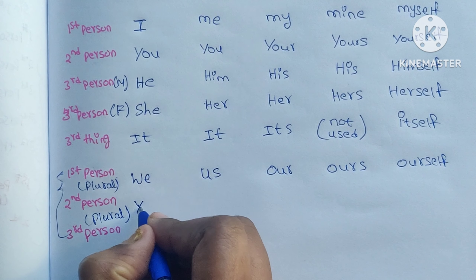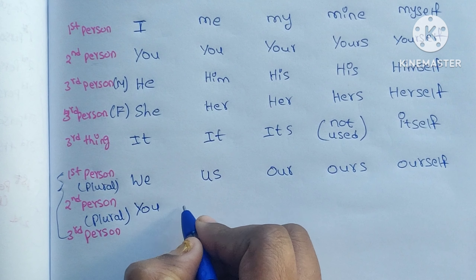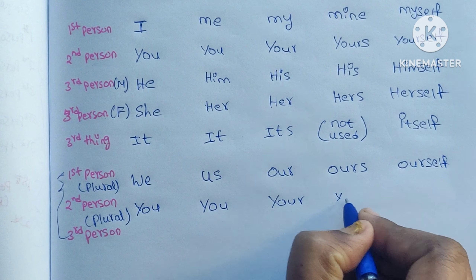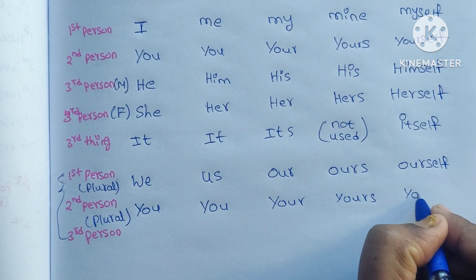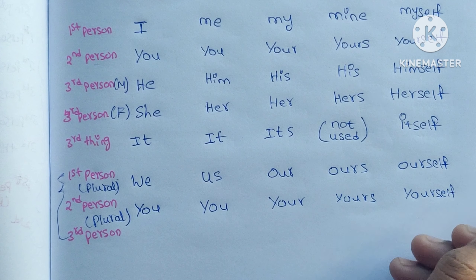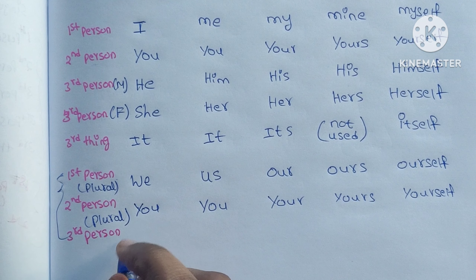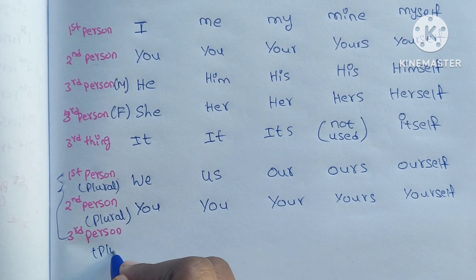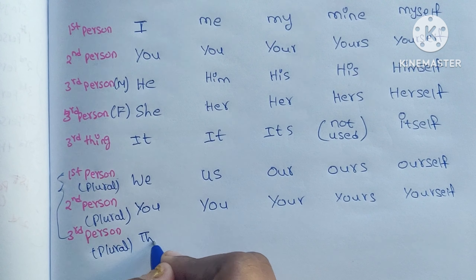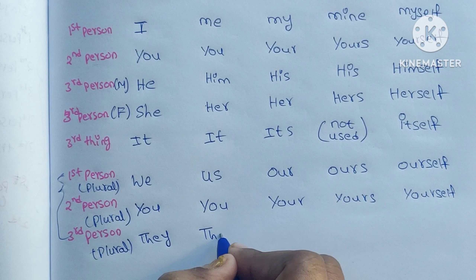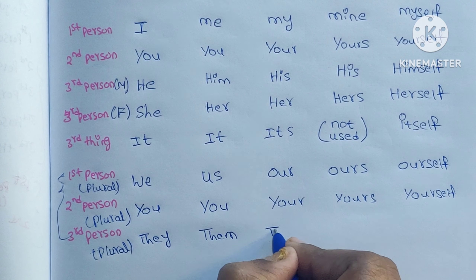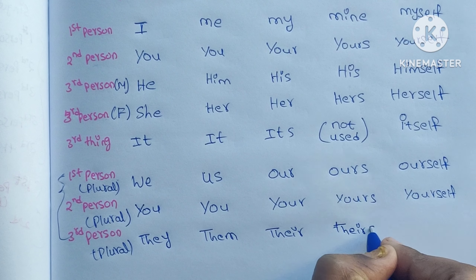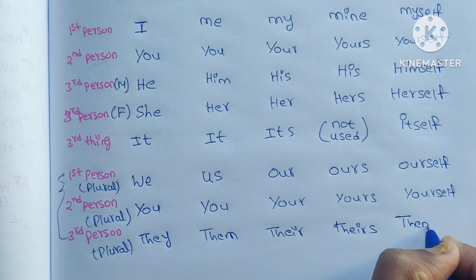Second person plural: subject is 'you', object is 'you', possessive adjective is 'your', possessive pronoun is 'yours', and reflexive is 'yourselves'. Third person plural: subject is 'they', object is 'them', possessive adjective is 'their', possessive pronoun is 'theirs', and reflexive is 'themselves'.